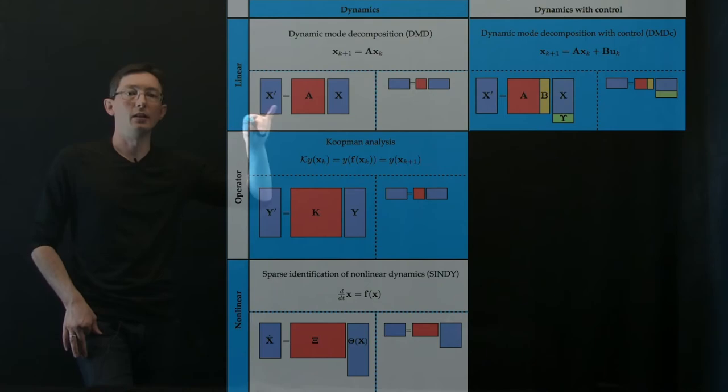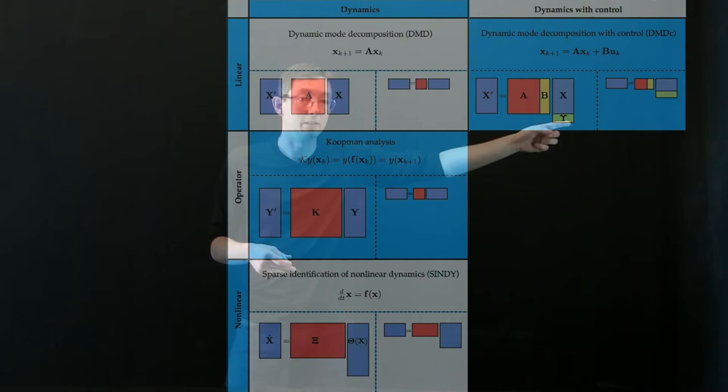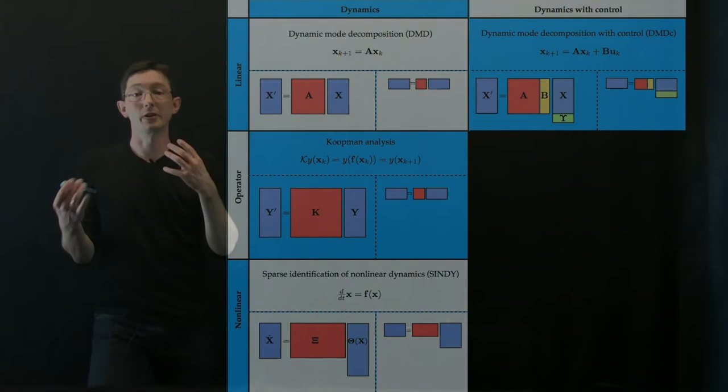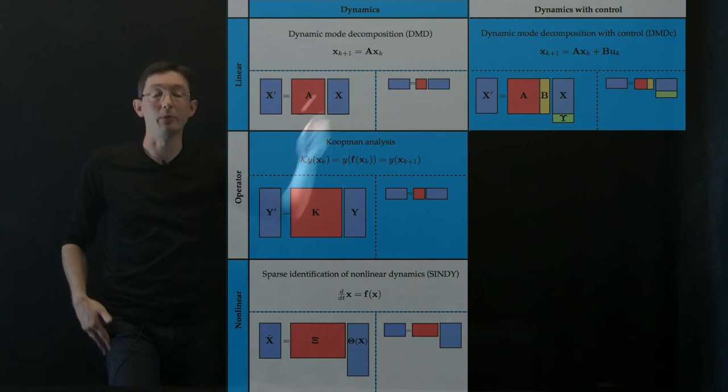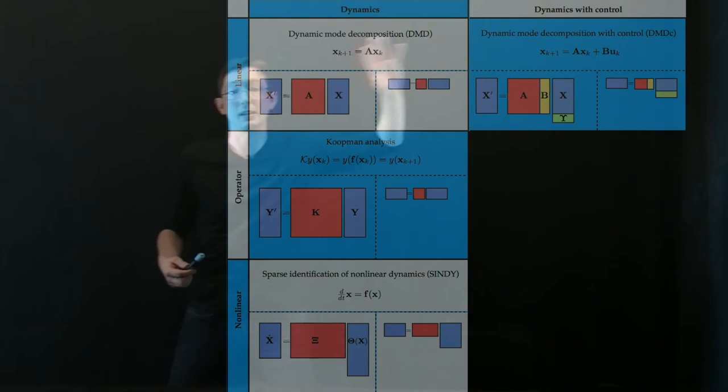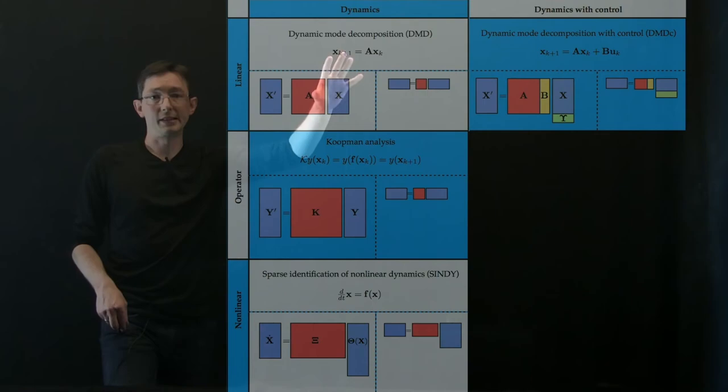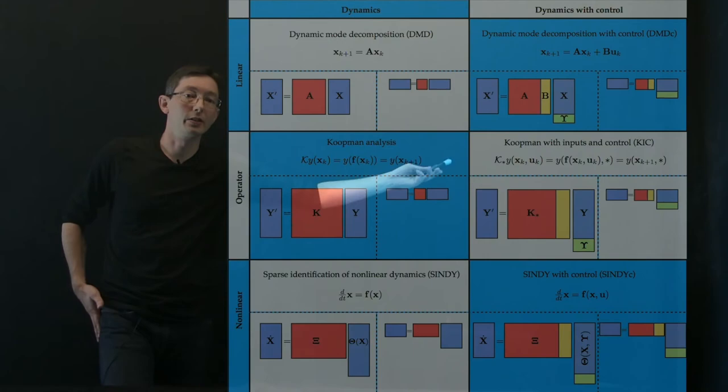If you actually can measure your input signal epsilon or U in time and form it into a matrix epsilon, you can solve simultaneously for your A and your B matrices. And you can disambiguate the effect of the dynamics, the A matrix, from the effect of actuation and control, the B matrix. So that's a very important extension from DMD to DMD with control. And that's actually the first extension that happens. Josh Proctor did that early on and extended DMD to handle inputs and control.